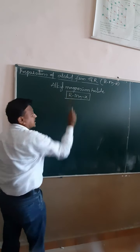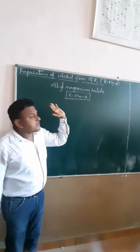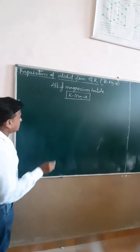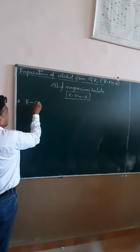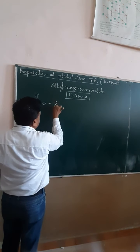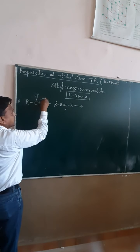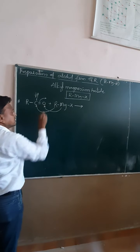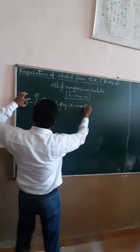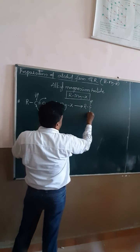By using this Grignard reagent, today we have to prepare an alcohol. It is a very important reaction in our syllabus. How to prepare the alcohol is by using two methods. One is aldehyde — aldehyde undergoes reaction with Grignard reagent, R-MgX, to form an addition product. As the cleavage of this pi bond, the alkyl magnesium attaches to the carbon. This forms R-C-H with O-MgX attached, which we call the addition product.